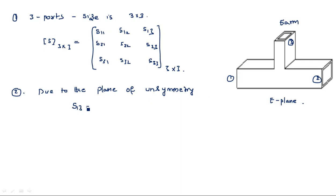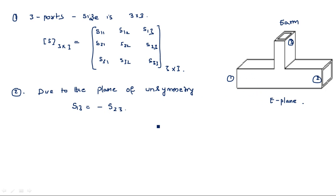Due to the plane of unsymmetry, S13 = −S23. S13 is the power applied at the first port and the output observed from the third port; S23 is power applied at the second port with output at the third port. These two are out of phase with each other because the first and second ports are out-of-phase ports. In the H-plane T-junction it was S13 = +S23, but in the E-plane T-junction it is S13 = −S23.